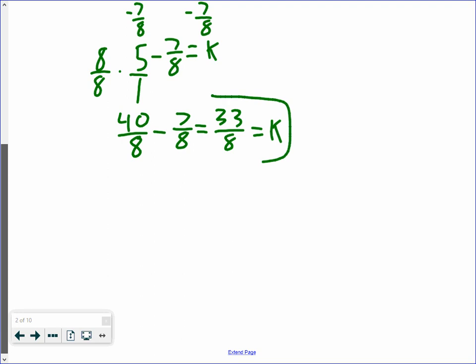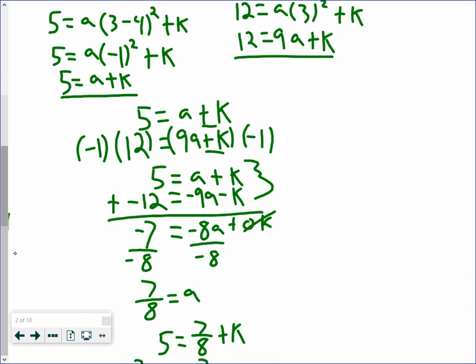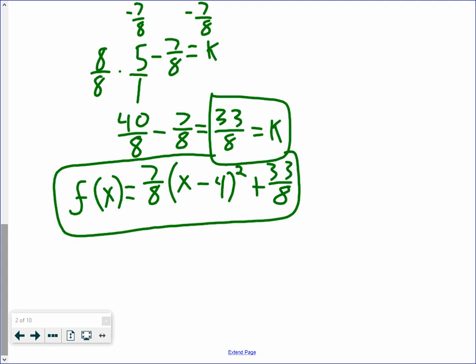Now we have our k value and our a value. We can put them into the equation. Our equation is f of x equals 7 over 8 multiplied by x minus 4 squared plus 33 over 8. And that is how we find the vertex form of a quadratic equation when we're not given the full vertex — just the axis of symmetry and two points.